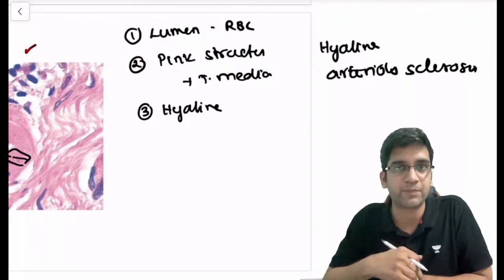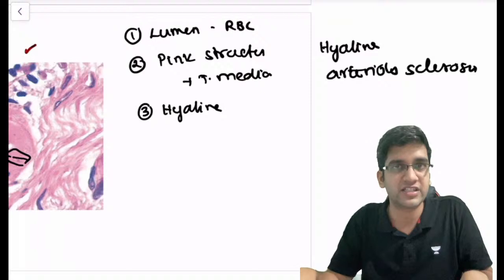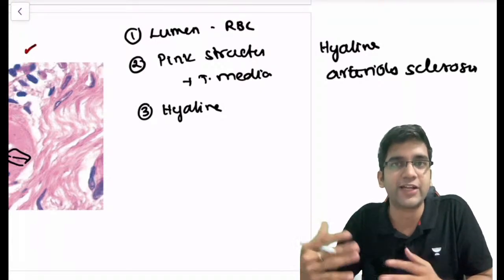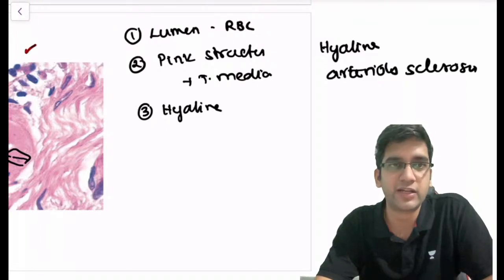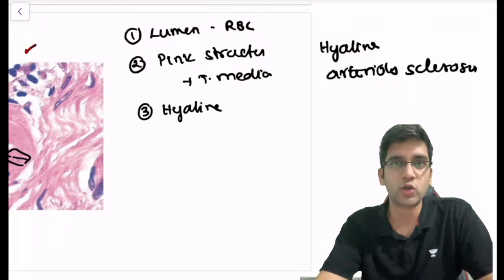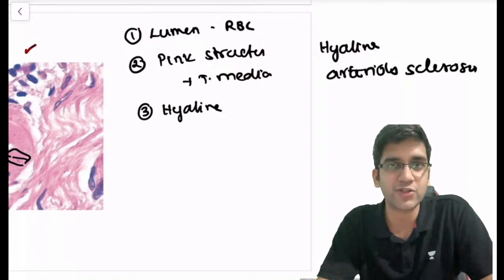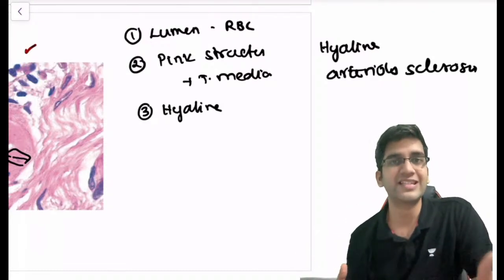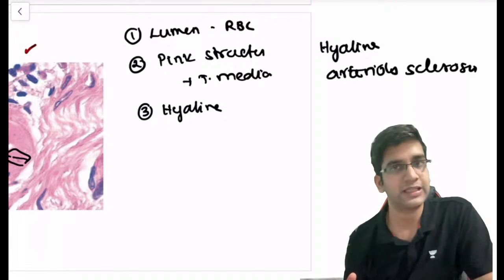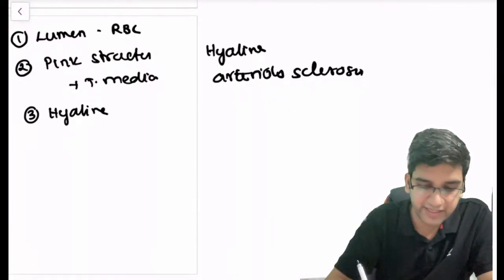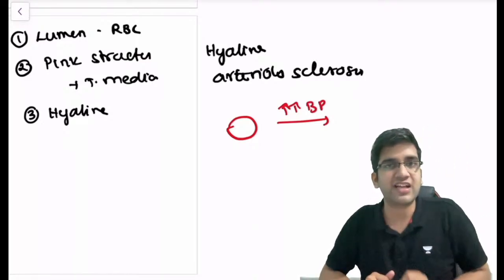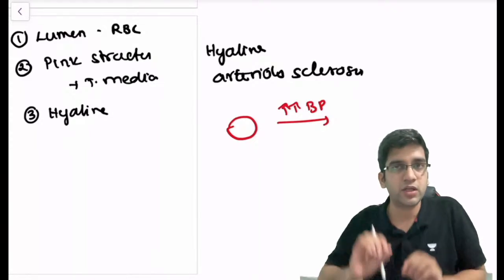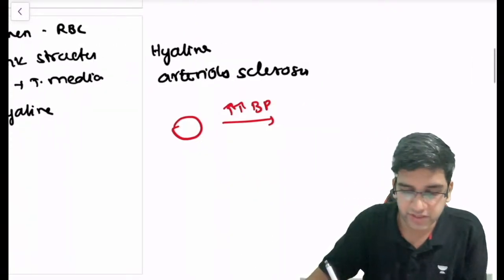Let's identify why we have hyaline arteriolosclerosis and what made it happen. I'll go in depth on whatever images we discuss. Arterioles are also called resistance vessels — you must have read that in anatomy and histology. We call arterioles resistance vessels because they take care of total peripheral resistance. Now if there is a change in blood pressure — increased blood pressure — due to the Frank-Starling interaction, the outward force will become more in the arteriole and fluids will try to go outside.